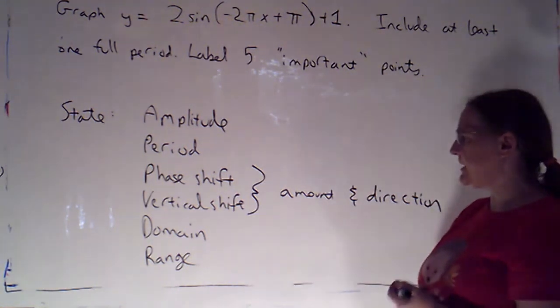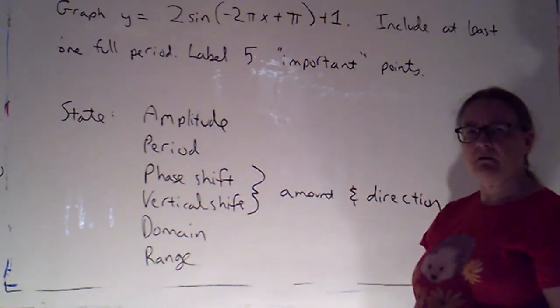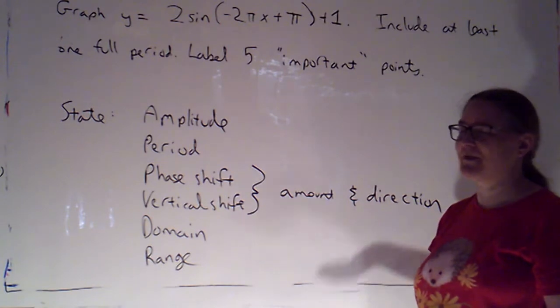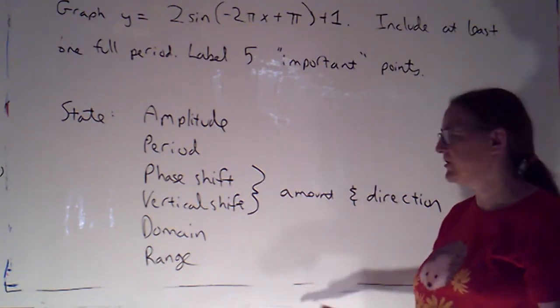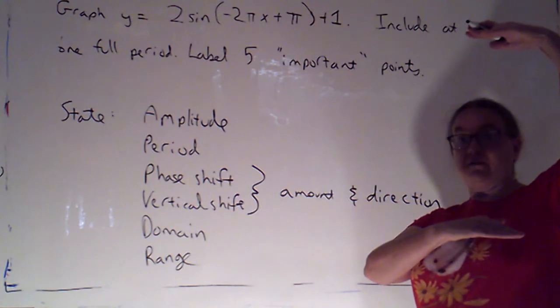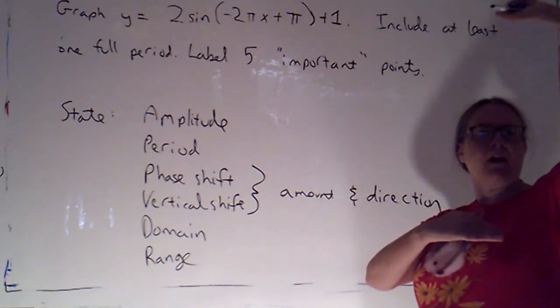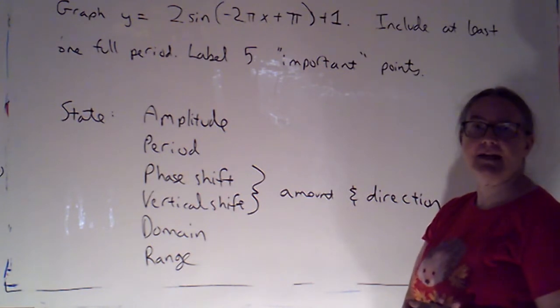Then I'm also asking for the domain and the range. Now we didn't talk about those in the last video. But the domain for any transformation of sine or cosine is going to be all real numbers, because sine and cosine are defined everywhere. And the range is just going to be the interval along the y-axis between the low point and the high point. So once I've got the graph, I'll be able to figure that out fairly nicely.